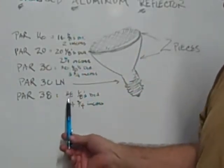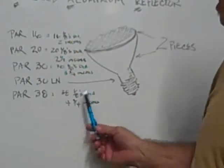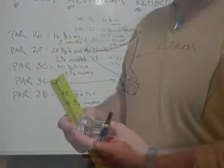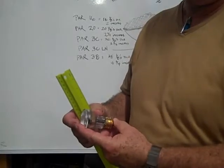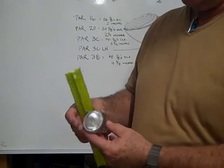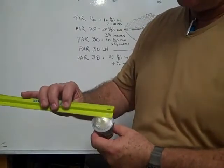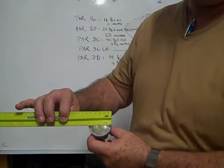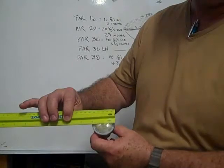Now the PAR 38 is 38 eighths of an inch in diameter across the face of the bulb. That's equal to four and three quarter inches. This is a PAR 16 halogen flood. It measures 16 eighths of an inch across the face of the bulb, which is equivalent to two inches.